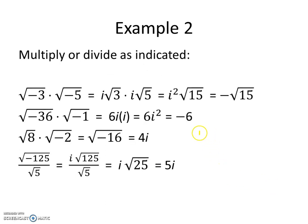On example 2, we're multiplying or dividing. We have negative 3 times the square root of negative 3 times the square root of negative 5. We write that as i times the square root of 3 times i times the square root of 5. So now we have i times i, which is i squared. The square root of 3 times the square root of 5 is the square root of 15. Since i squared equals negative 1, the final answer is negative square root of 15.